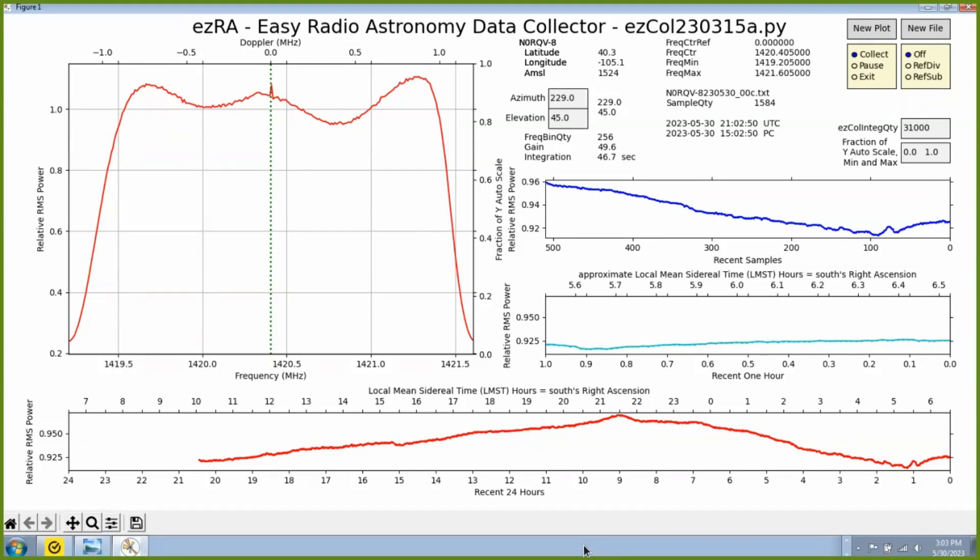EZCOL calculates the average power value and presents them in three strip charts. The bottom strip chart shows that average power over the last 24 hours from long ago on the left to most recent on the right. The middle strip chart shows the average power over the last one hour, and the top strip chart shows the last 500 samples.